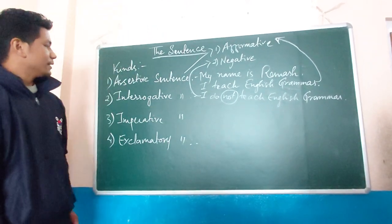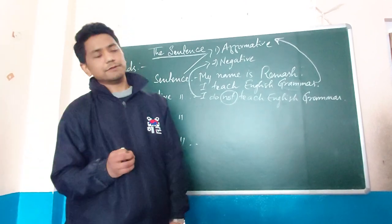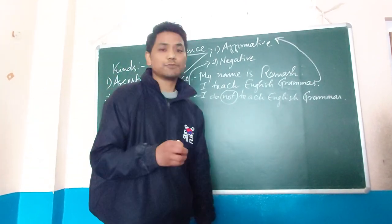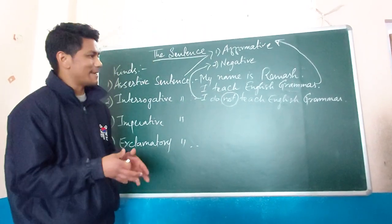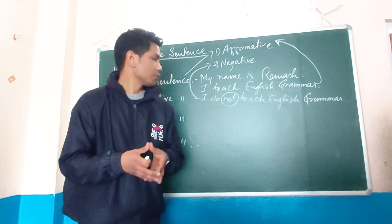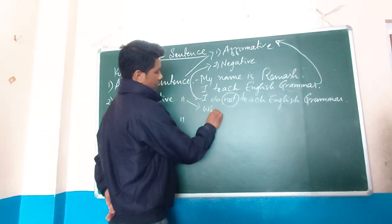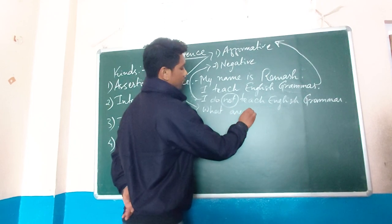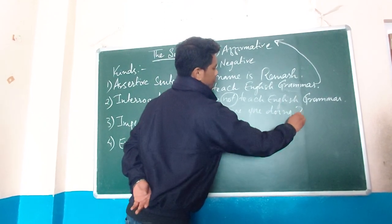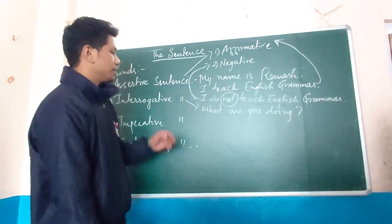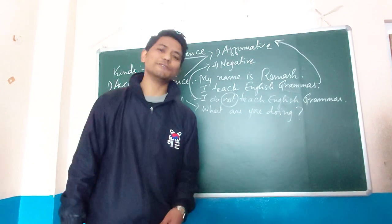Next one: interrogative sentence. Interrogative sentences are those sentences which ask a question — they are used to ask questions, and they always end with a question mark. For example: 'What are you doing?' — that is an interrogative sentence. 'Do you like my videos?' — that is also an interrogative sentence.